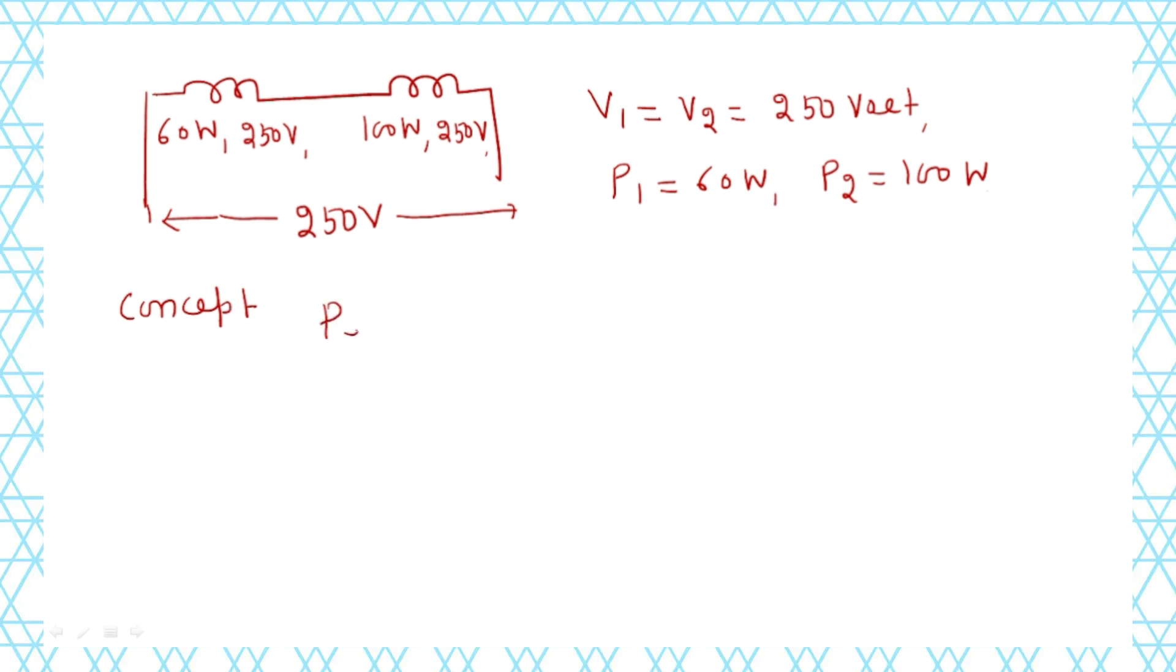The formula is P_eq equals P1 times P2 divided by P1 plus P2. When the total voltage is equal to V1, the voltage is equal. It means that V1 equals 250, and V2 equals 250, and supply voltage equals 250. So V1 equals V2. If the voltages are the same, in that case, if you want the total power, you can use this formula: P1 times P2 divided by P1 plus P2.